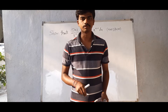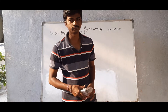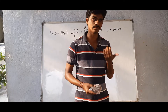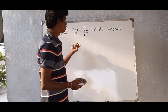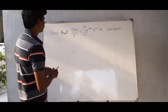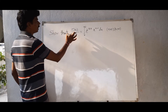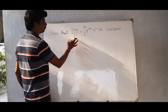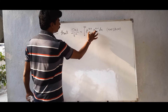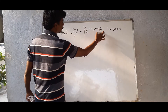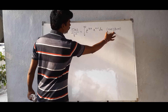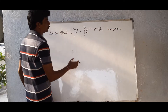Hi viewers, welcome to Rajesh Lakalu. Today our topic is beta gamma problems. Now show that gamma of n by k power n equals integral from 0 to infinity of e power minus kx, x to the power of n minus 1, dx, where n greater than 0 and k greater than 0.